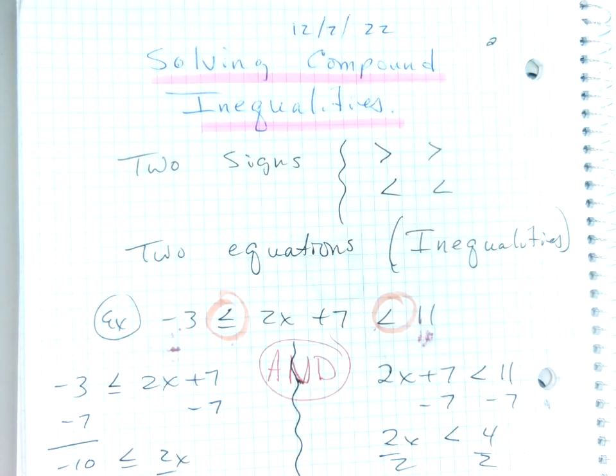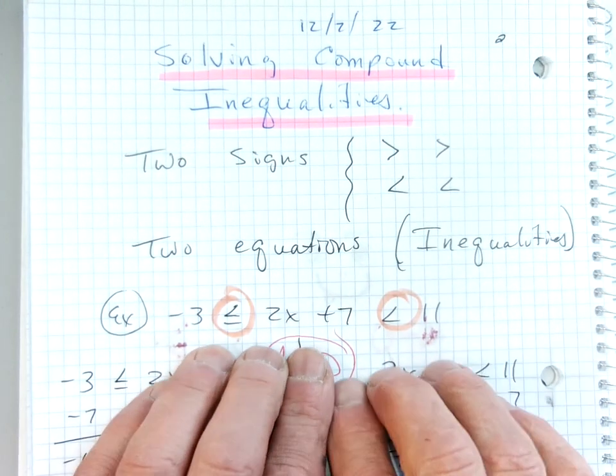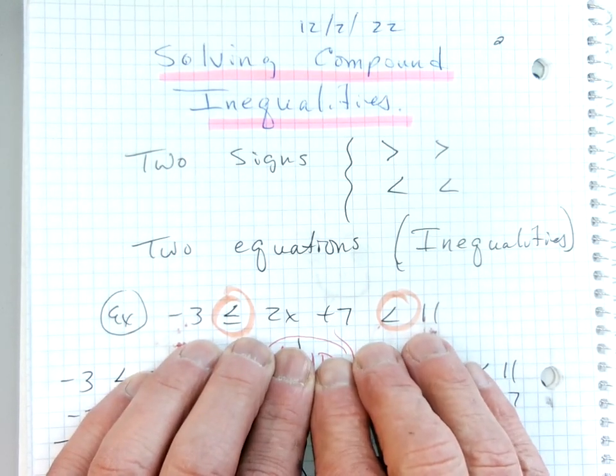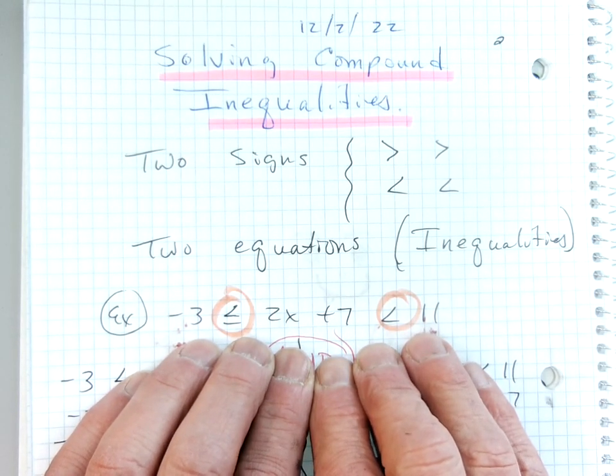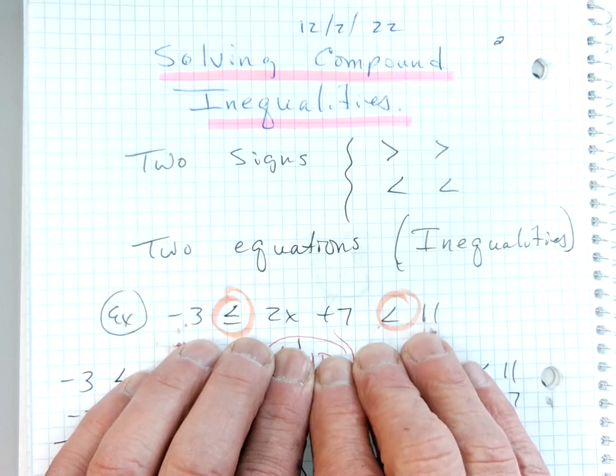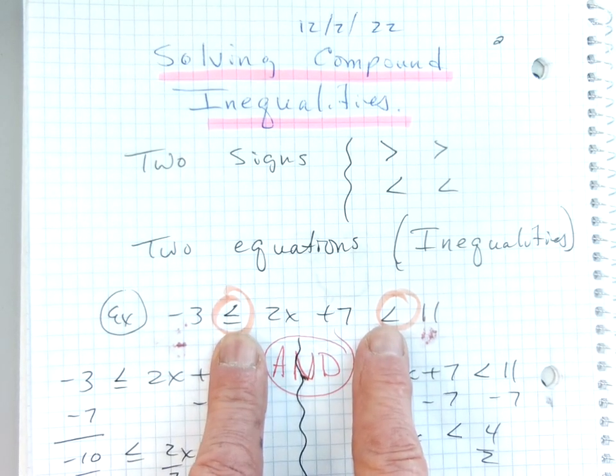Okay, so we start out with an example. Here's my example. I've got negative 3 is less than or equal to 2x plus 7 less than 11. So in a sense, because of the two signs, we have two equations.